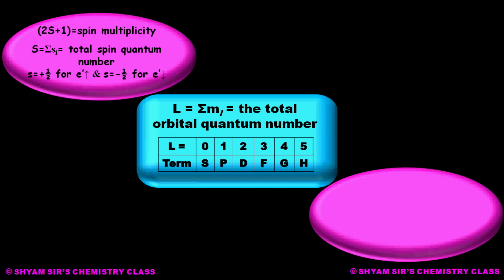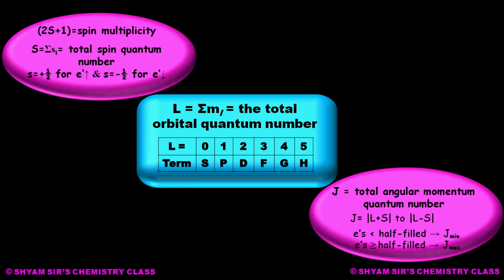Now we come to the right subscript, which is J. J is the total angular momentum quantum number. To calculate J, if we know the values of L and total spin S, then J ranges from L plus S to L minus S. One rule applies for choosing J: if electrons in the orbital are less than half-filled, then the minimum J value should be taken. If electrons are half-filled or greater than half-filled, then the maximum J value should be taken.